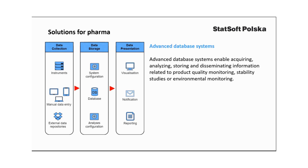The third and most important layer, especially for end users, includes all data presentation elements and tools. Here you can access reports and online dashboards via your web browser. You can define and receive notification alerts — for example, when an OOS or OOT occurs or any other specified event happens. You can also define reports and schedule them to be generated on a regular basis based on the most up-to-date data.